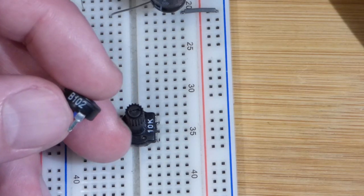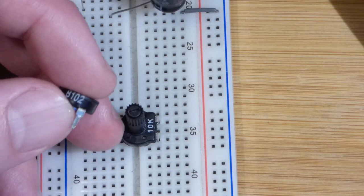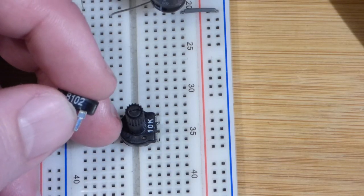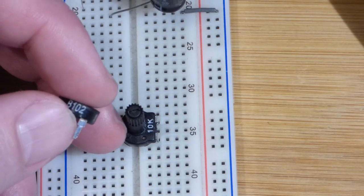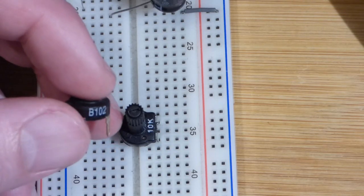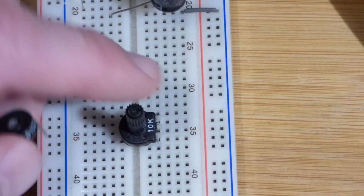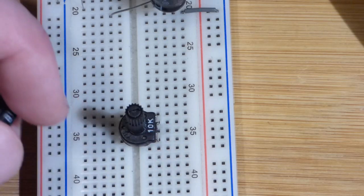And so it says 1, 0, and then 2. So that 2 stands for the number of zeros following 1, 0. So 1, 0, 0, 0. This is a 1,000 ohm trim pot. This is a 10 kilo ohm trim pot.